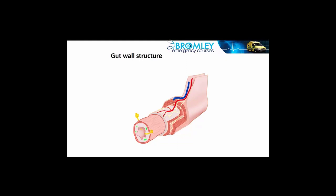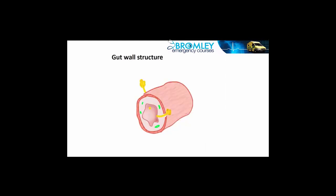Starting with the mucosa layer, the innermost of the layers seen in this diagram. We've got the epithelium in the center, which may vary in terms of its number of goblet cells and the actual epithelial cells, the absorptive surface, etc. This then has a basement membrane which maintains its shape. Beneath the epithelium, we have what's known as the lamina propria, which is a connective tissue that contains blood vessels and also lymphatics, which are important in absorption.